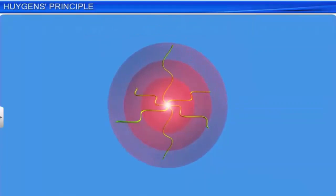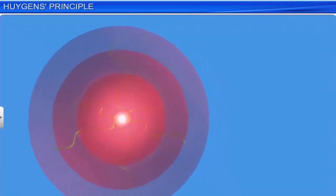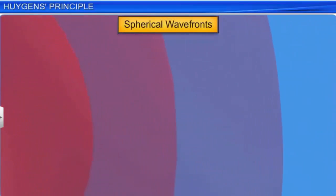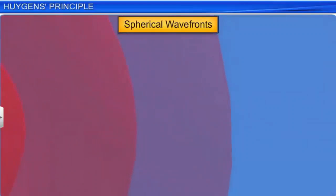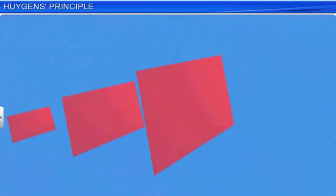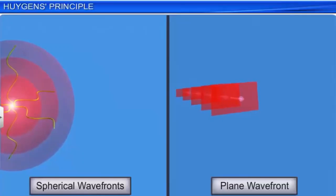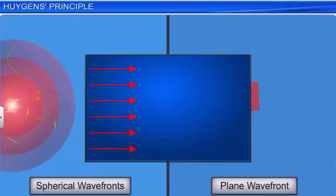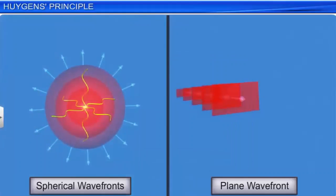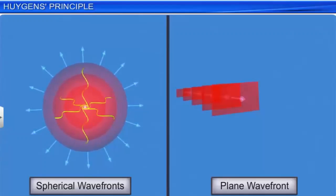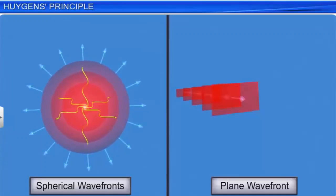At a large distance from the source, these spherical wave fronts have large radii of curvature. A small portion of a spherical wave front at a very large distance from the source can be treated as a plane wave front. In physical optics, we visualize light as waves and wave fronts. In ray optics, we visualize light as rays. A line drawn perpendicular to the wave front in the direction of its propagation is treated as the ray of light in ray optics.